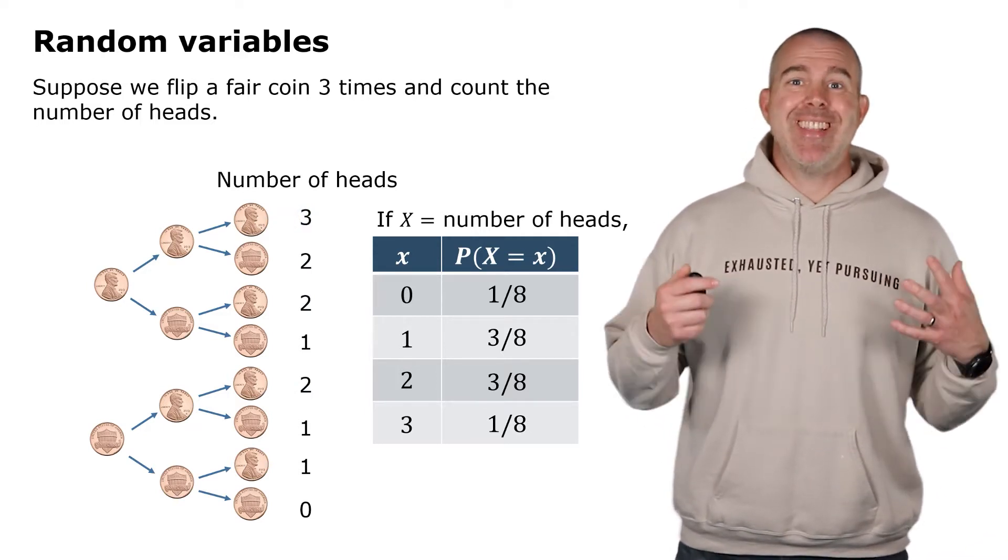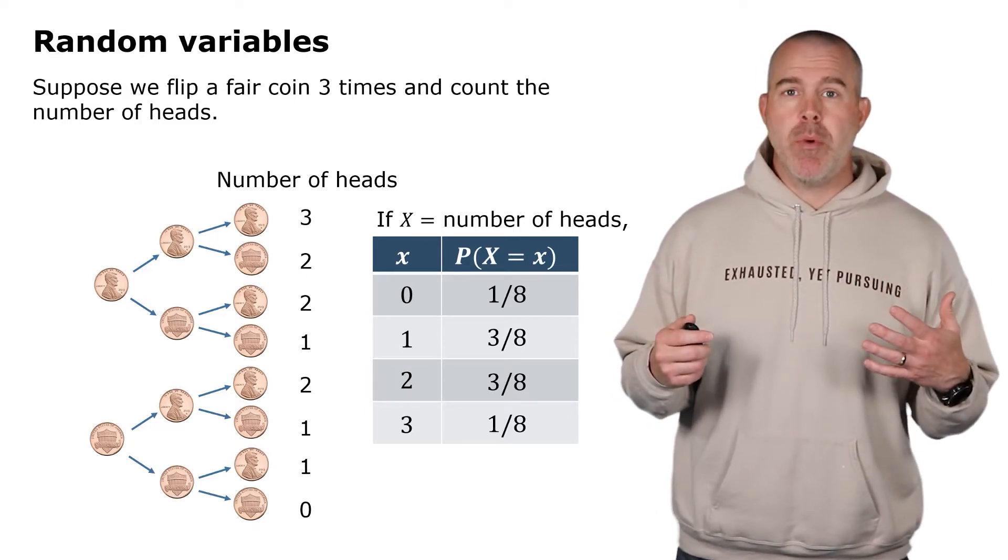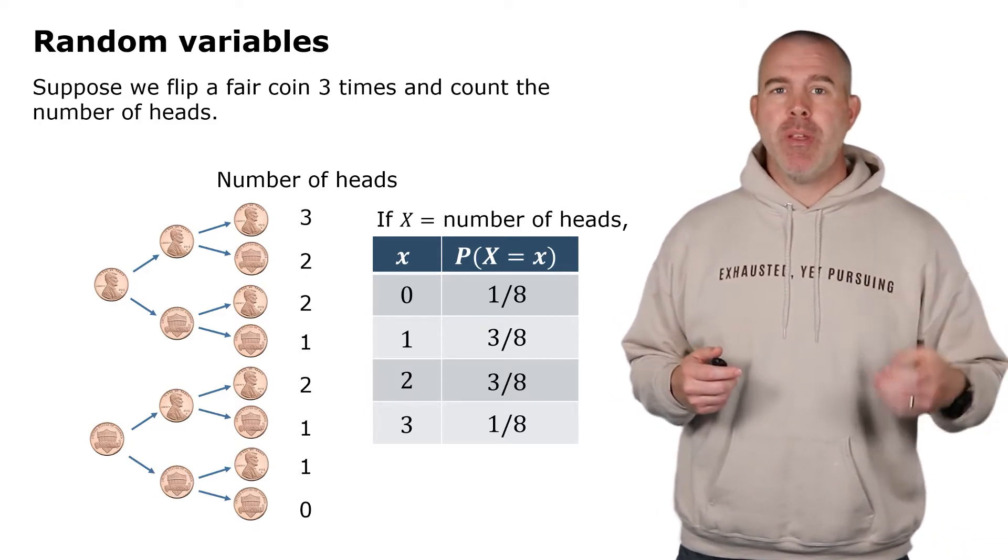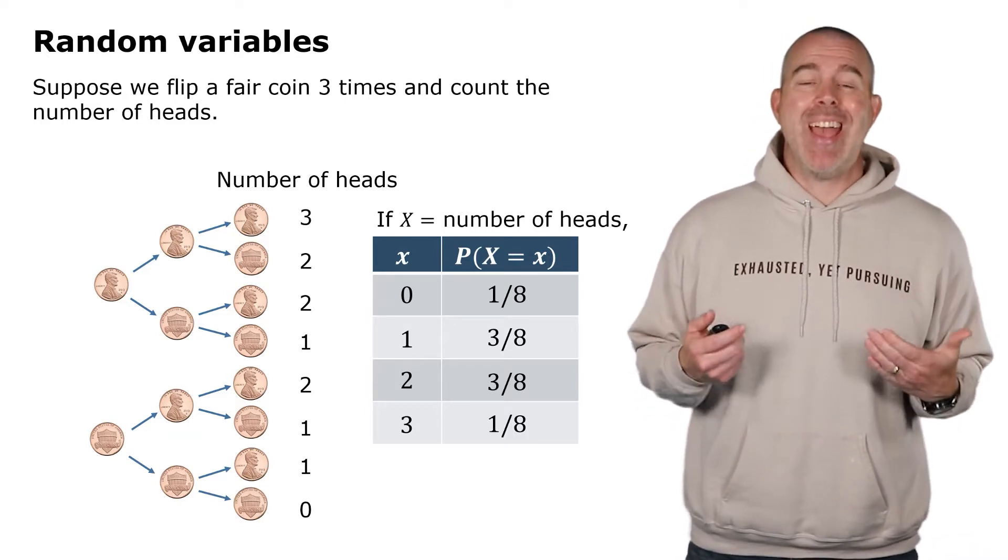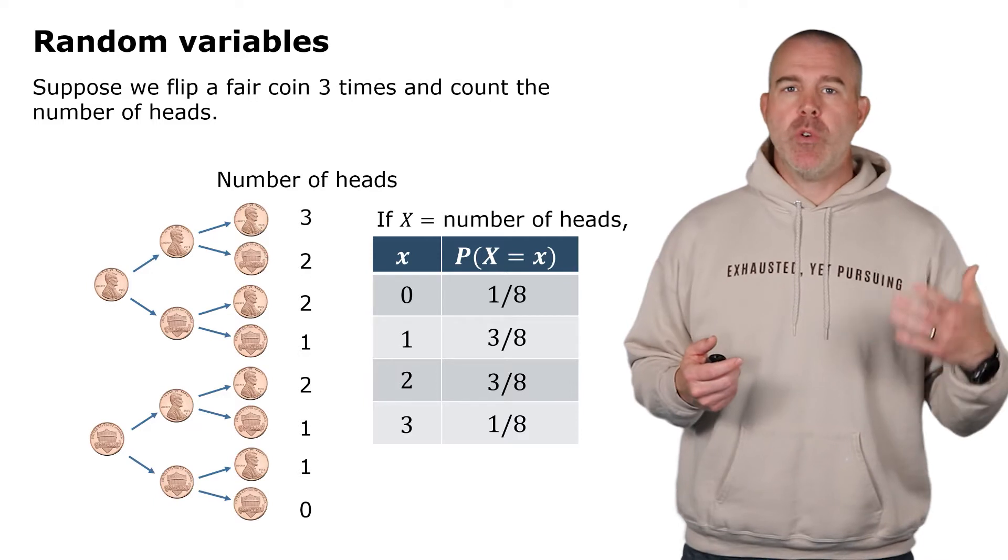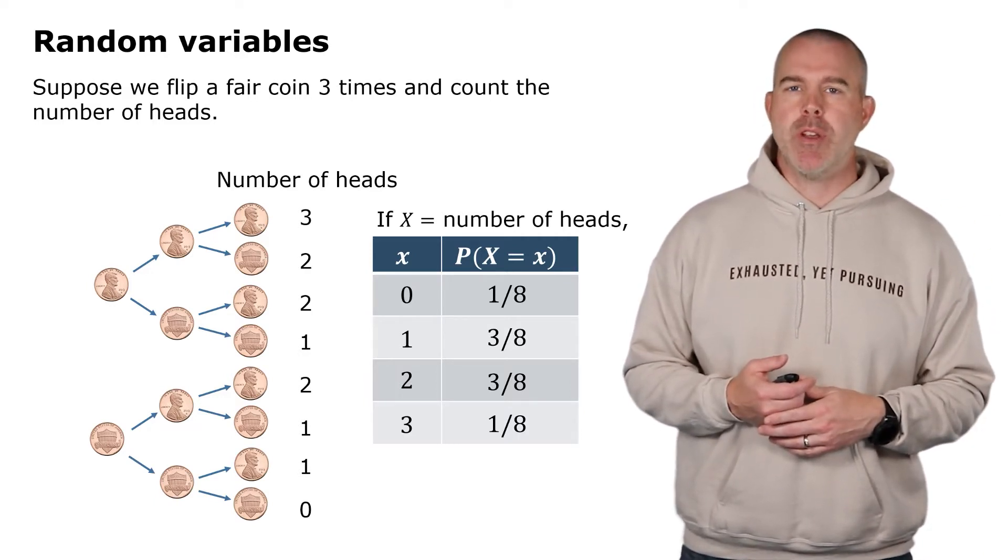This thing here, this x, this number of heads, this is a random variable. There's a probability experiment here, flipping three coins, and then we're quantifying that by counting the number of heads. That's what a random variable is—we're quantifying the outcome of some probability experiment.